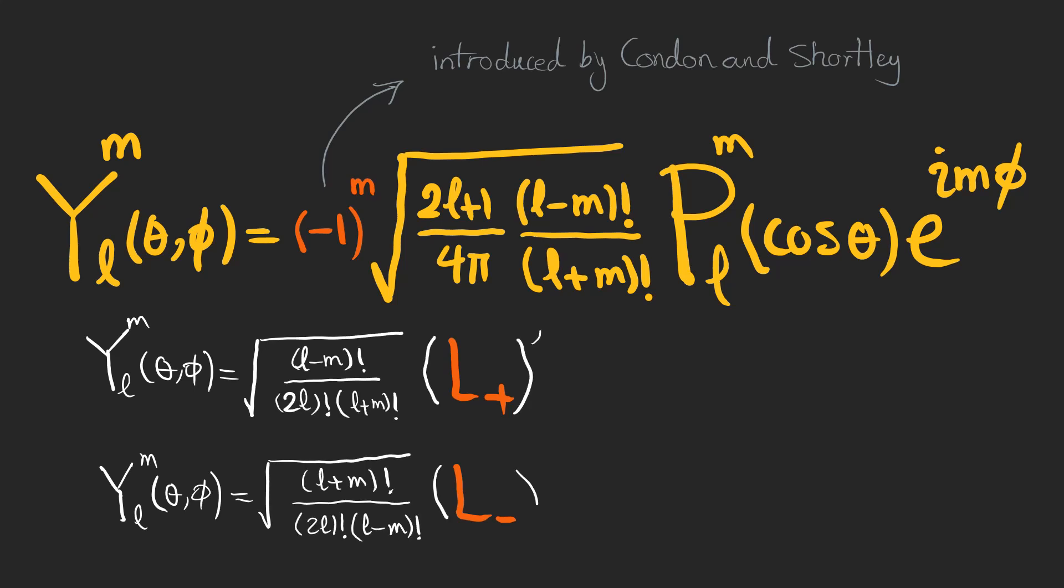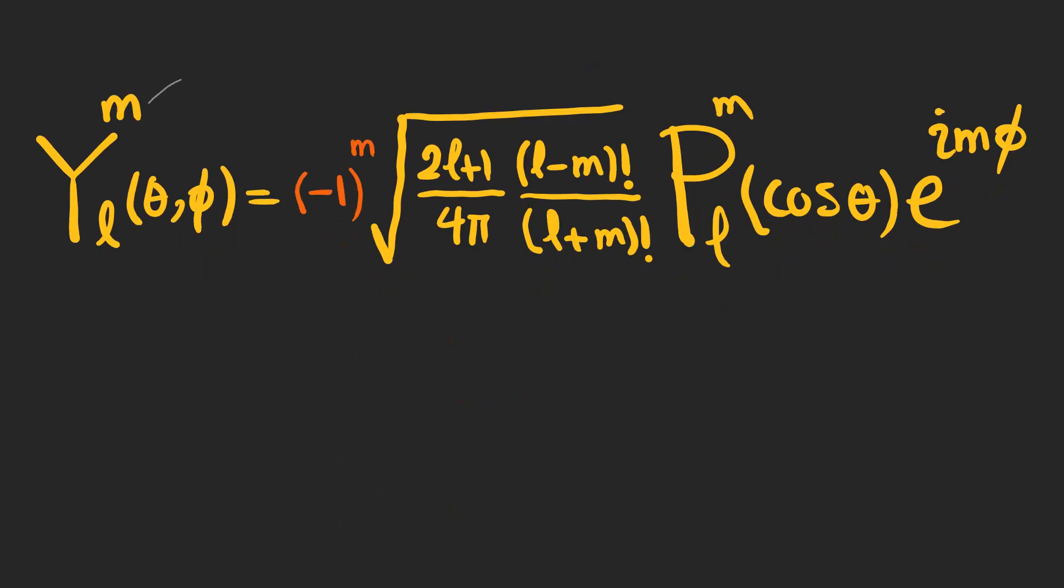And by using these ladder operators, we can write the spherical harmonics in this form. This solution is for positive M's, but what about the negative ones?